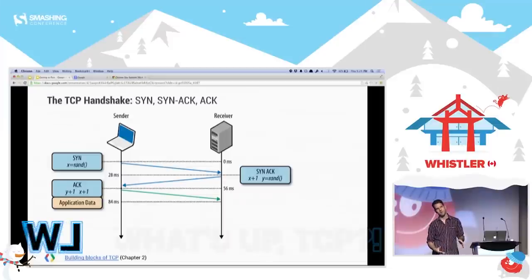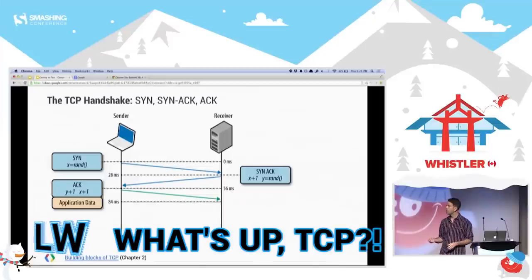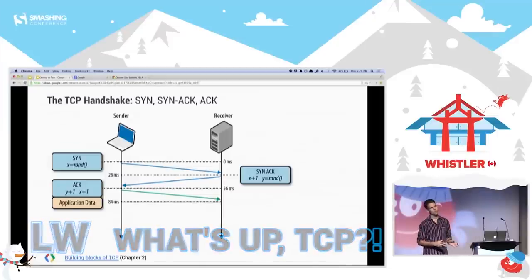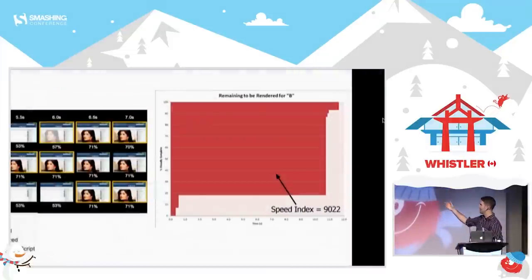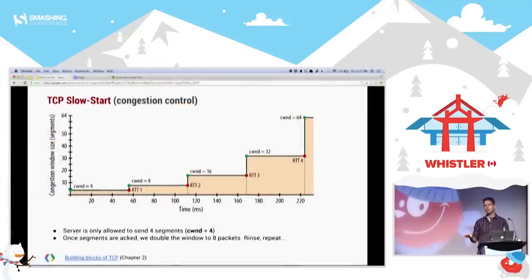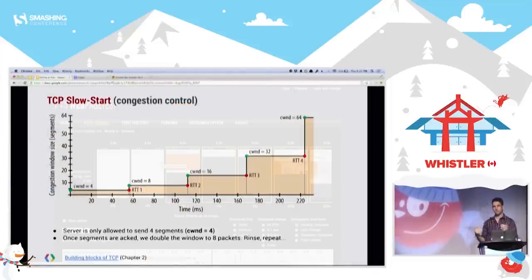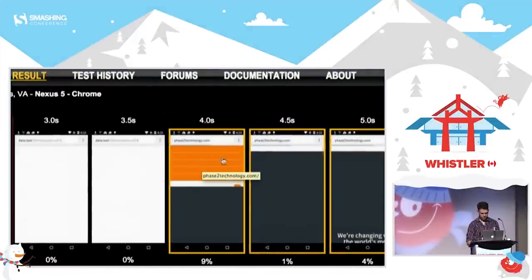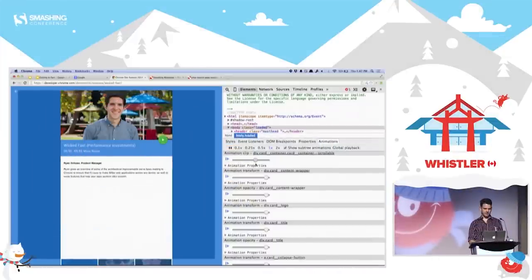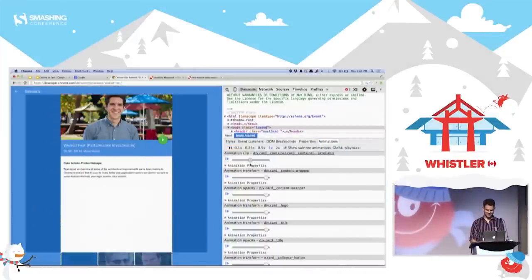Network latency kills fast page experiences. In this talk from Smashing Conf, Paul Irish explains Speed Index, and how TCP is a lot like his former 7th grade self saying hi to the coolest kid in school. Live performance audits demonstrate common pitfalls from actual sites, and there's even a few bonus DevTools goodies at the end.